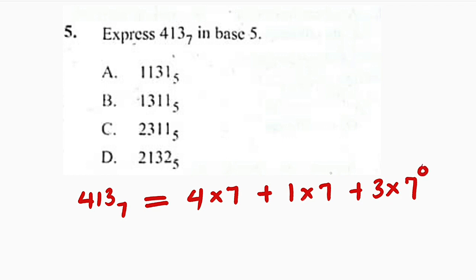First of all, you have to take this number, which is in base 7, convert it to base 10. So we have 413 in base 7. To convert it to base 10, you take 4, which is the first digit, you multiply by 7, which is the base. You add, you take 1, which is the second digit, multiply by 7 again, which is the base. Then lastly, the last digit, which is 3, multiply by the base. Then you assign index from 0, that is from the last number, 1, 2, like this.